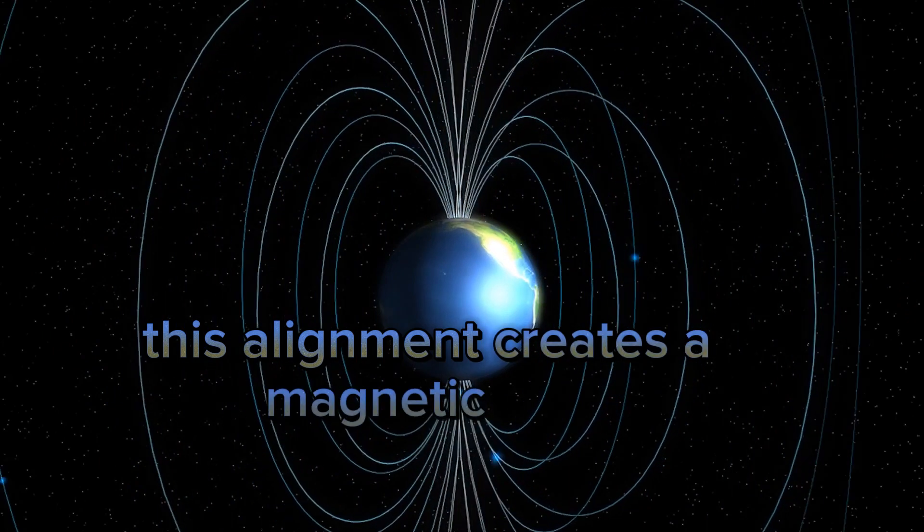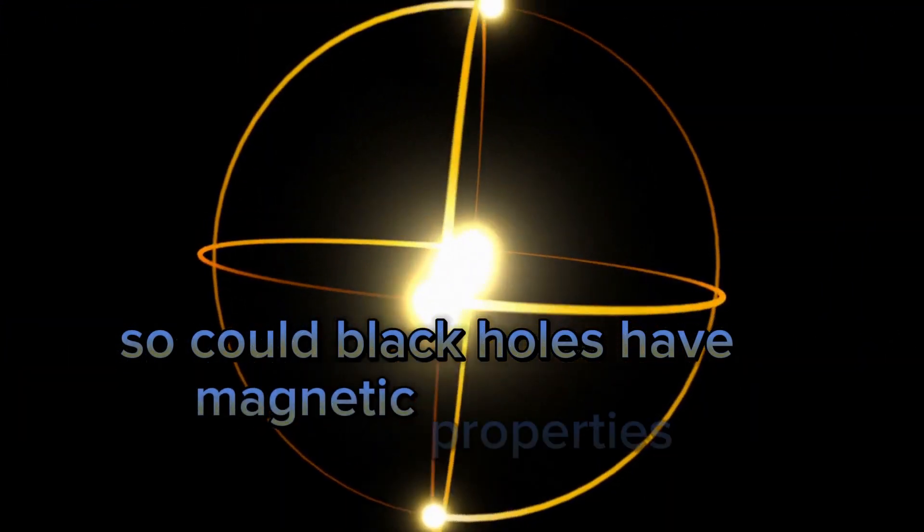This alignment creates a magnetic field. So, could black holes have magnetic properties at their core?